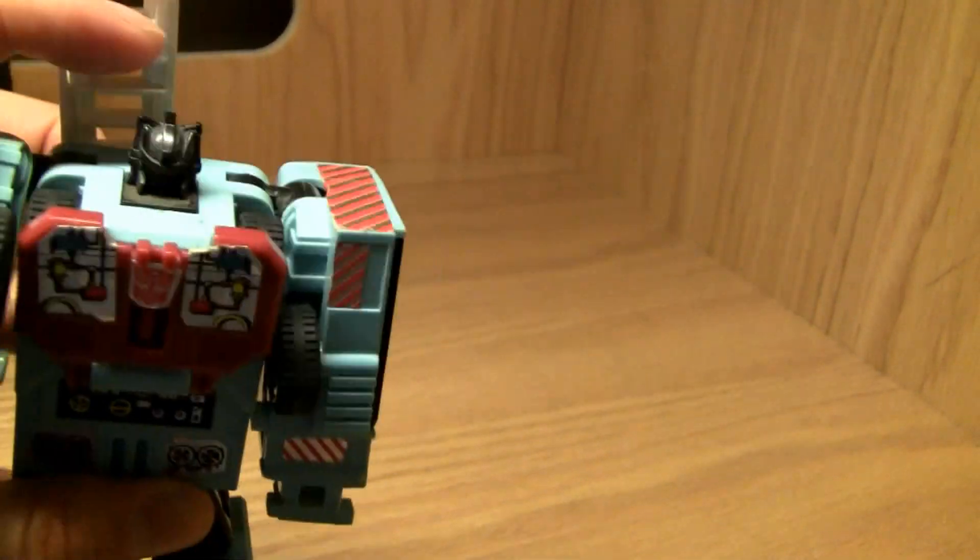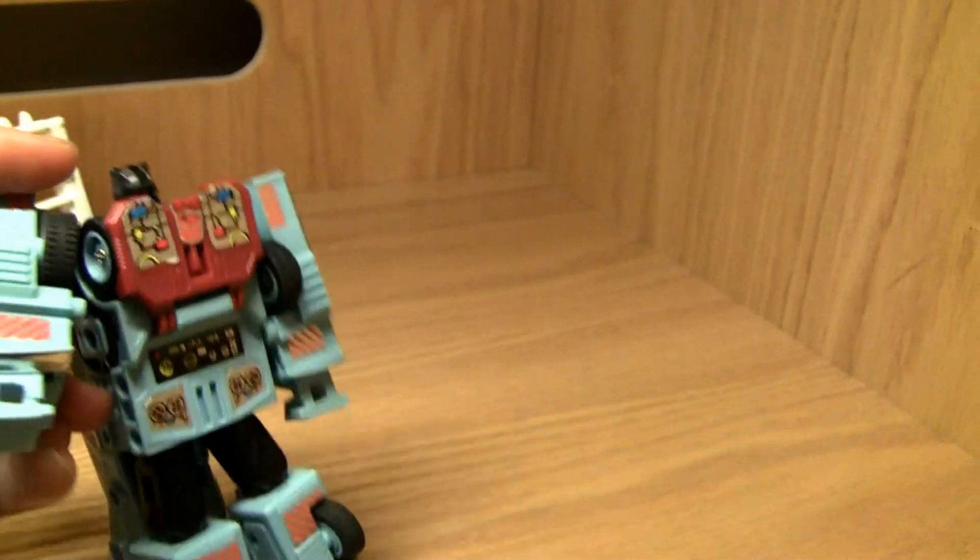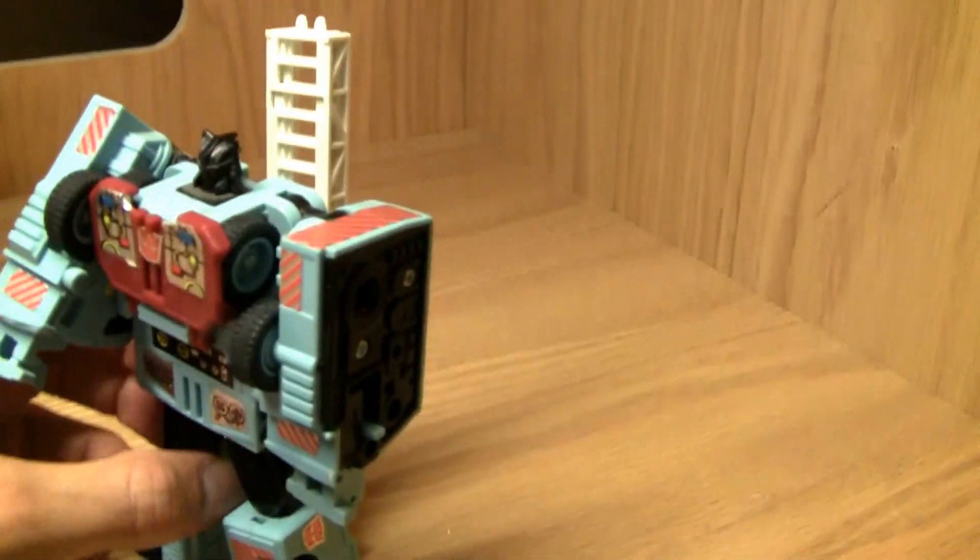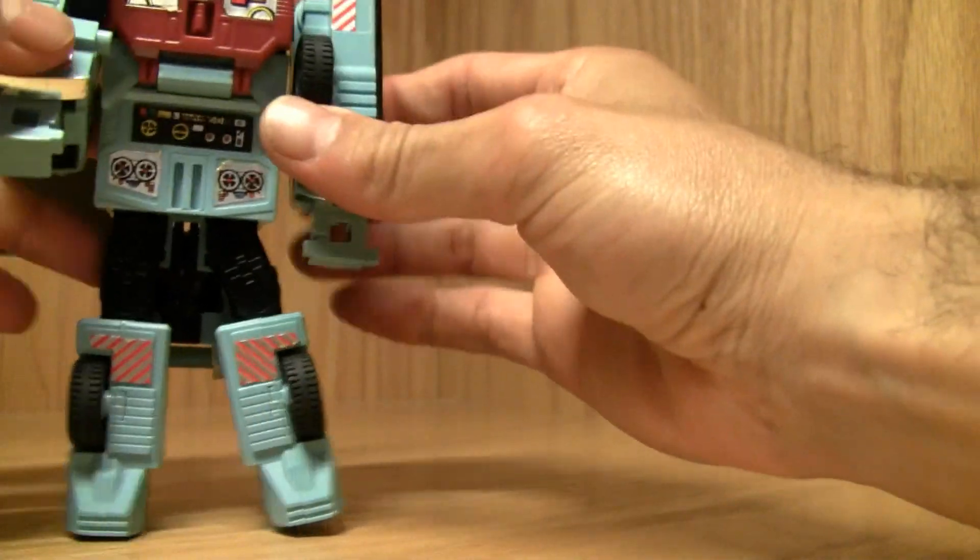So yeah, he's slightly smaller than voyager class. He's more of a deluxe class size. And you know, if you want, you can definitely stow that over there. The robot mode's okay, not bad. You know what, I'm gonna give him a 6.5 because he's looking rather not that bad. I love the baby blue. I love the detailing on that robot or the head.